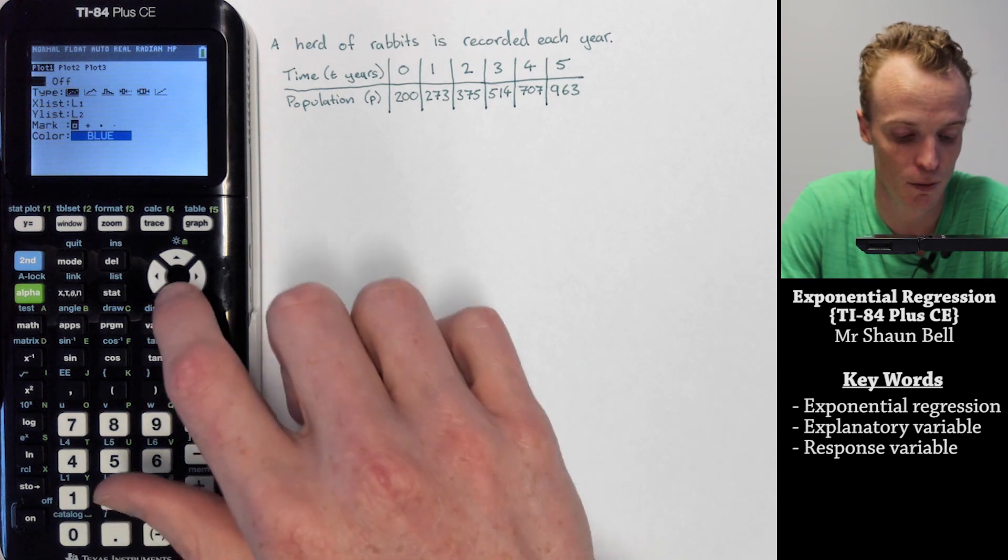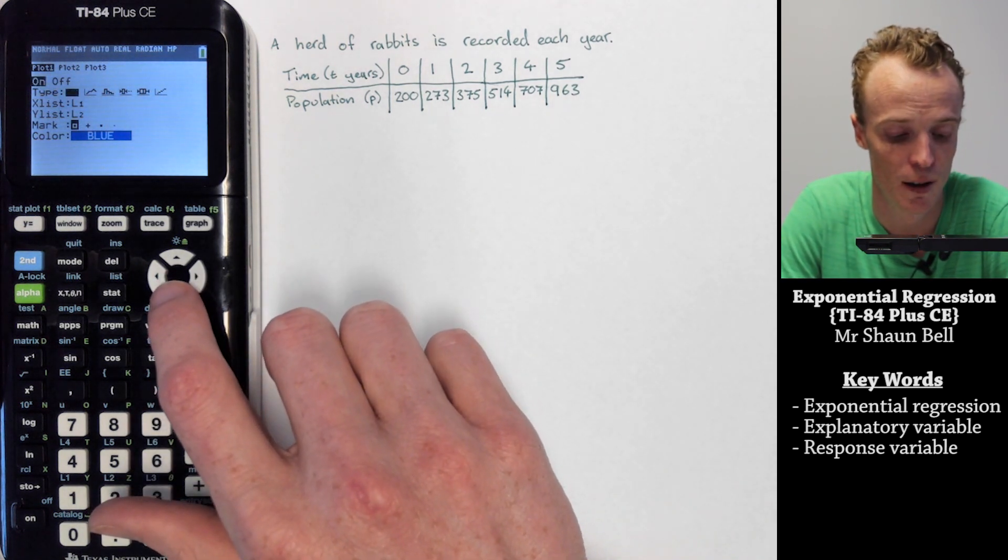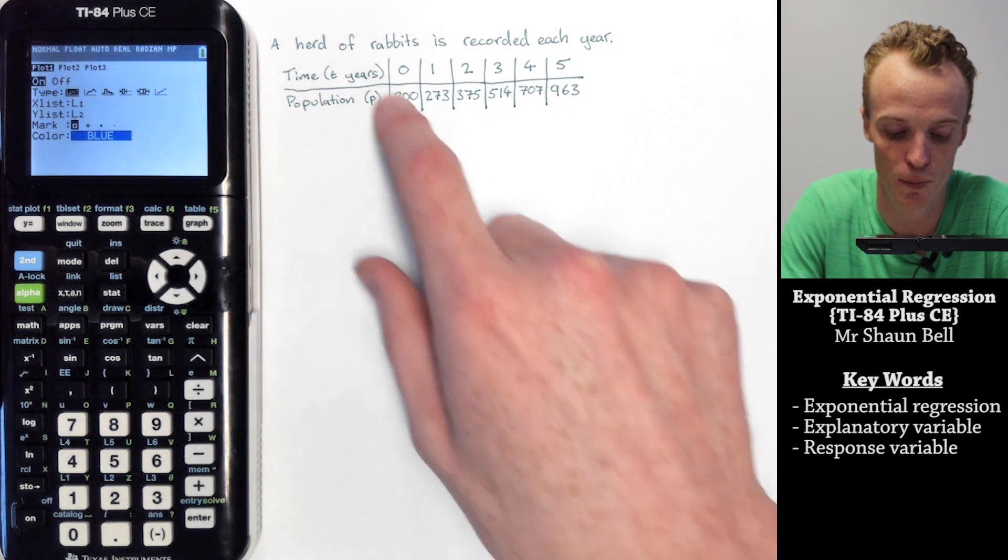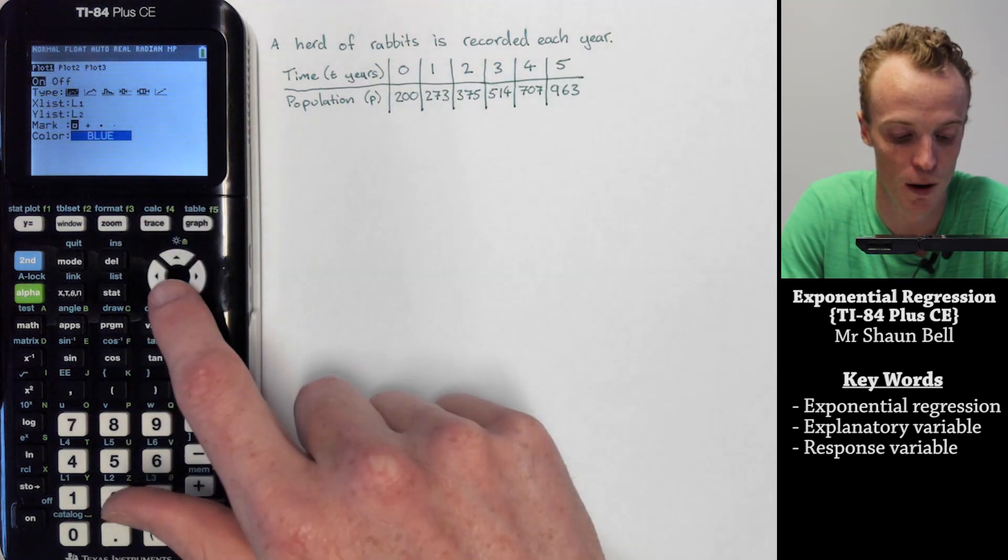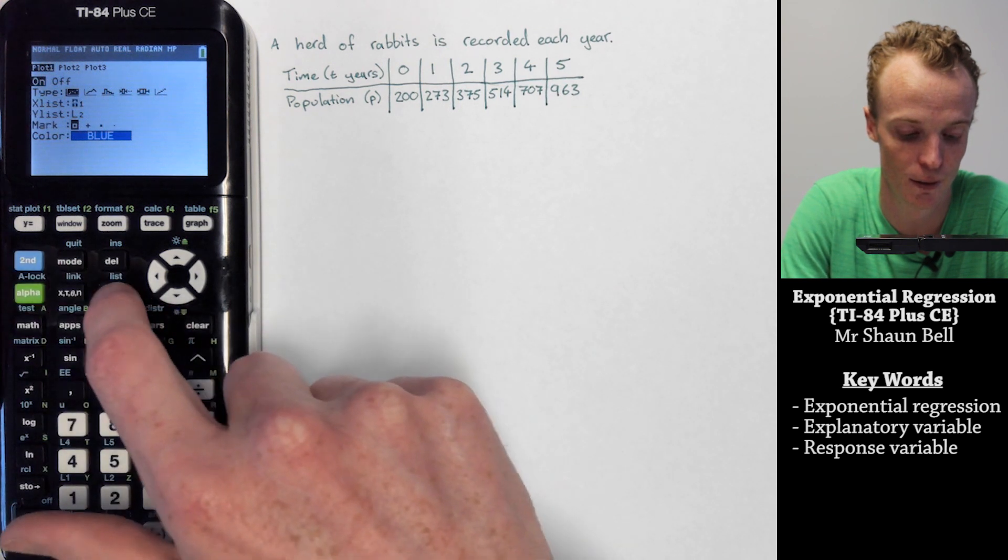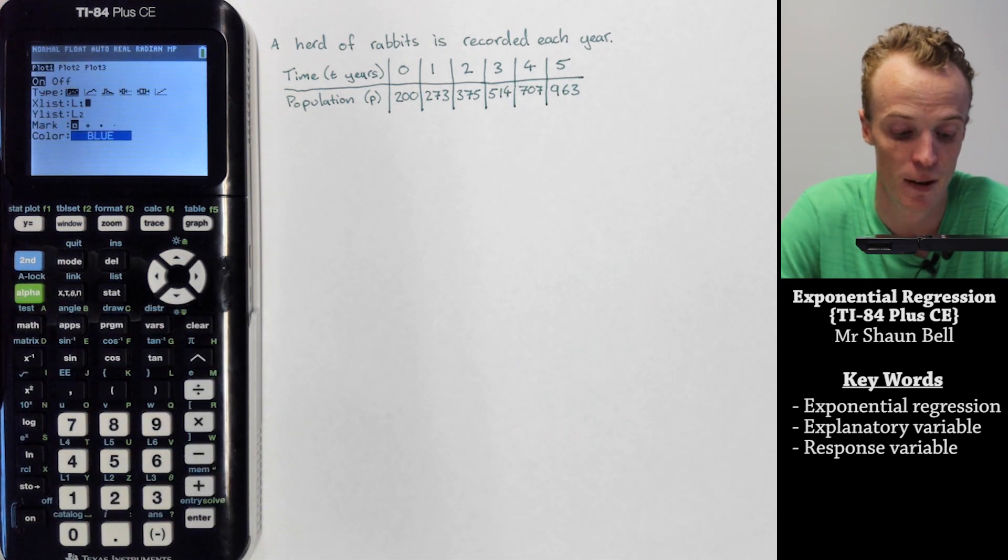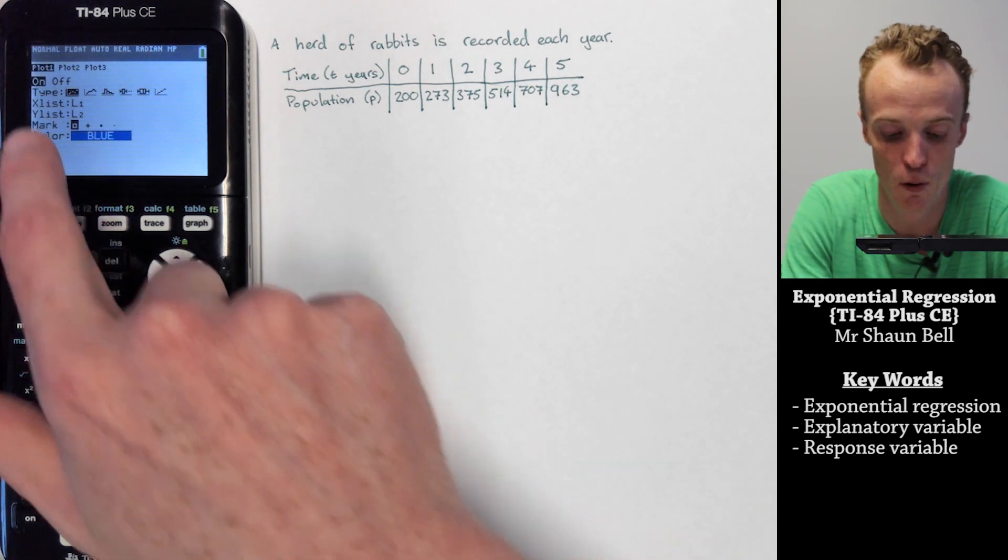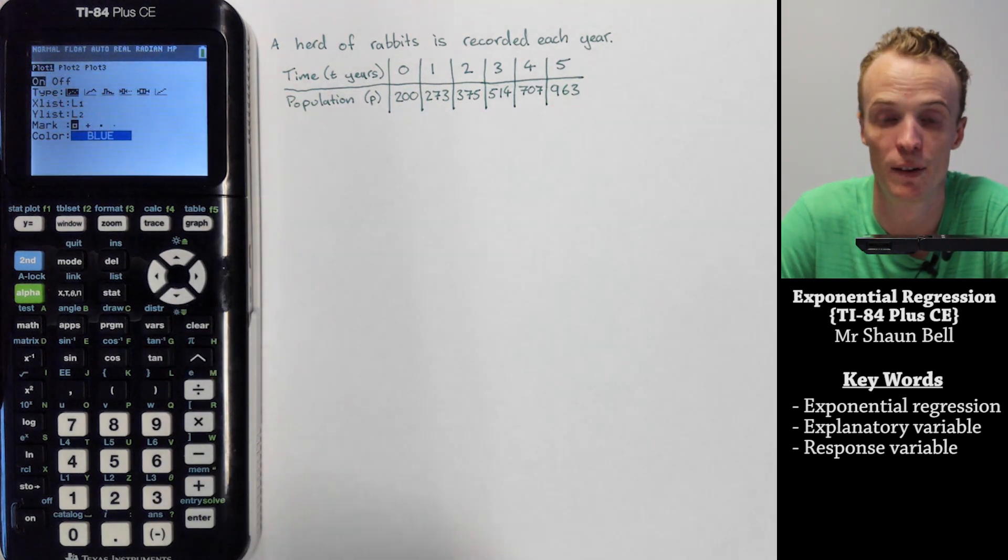We want to graph this as a scatter plot, so we want to make sure this is highlighted. Our X list is going to be the time which we put into list 1. If this wasn't list 1, you just go to second list and then select list 1. And we want our Y to be our population which we entered into list 2.